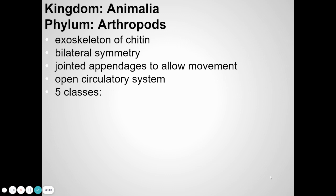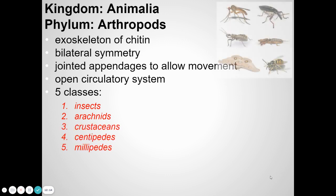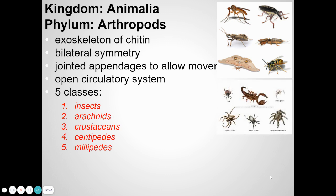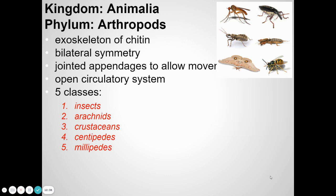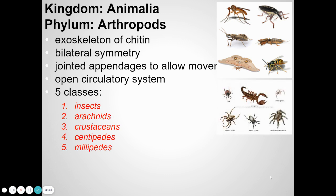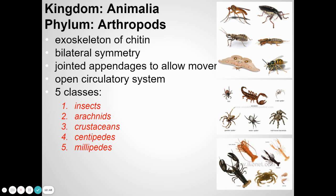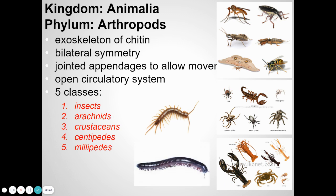Arthropods are a huge group that includes insects, arachnids, centipedes, millipedes, and crustaceans. It's the biggest animal group of all. They have an exoskeleton and jointed appendages — some fly, some walk, some crawl. Insects have six legs, arachnids have eight legs, crustaceans have ten legs, and centipedes and millipedes have more than ten.